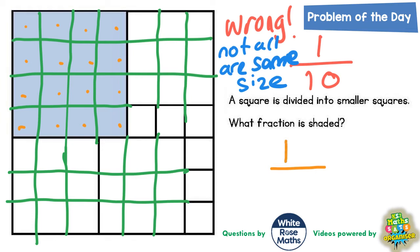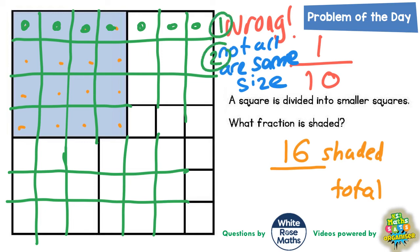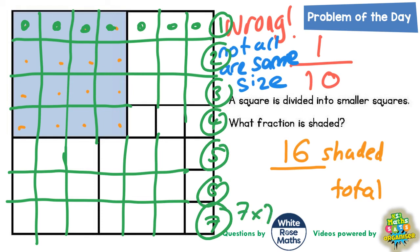So there are 16 squares shaded out of a total of, well the easiest way to count the total is to see how many is on the top row and then times that by the number of rows. So on the top row there is 1, 2, 3, 4, 5, 6, 7 and there is 1, 2, 3, 4, 5, 6, 7 rows. So there's 7 rows of 7, so 7 times 7 is 49 so there must be 49 squares all together.